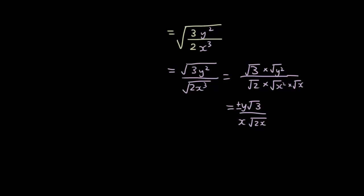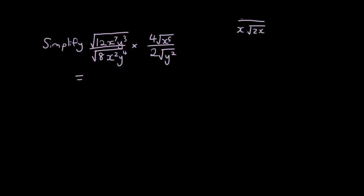Hopefully you understood everything so far. Now to finish off, I'm going to give you one that combines multiplication and division. This one looks pretty complicated — I'll let you guys decide how to do it, as there are a few ways. My way is to put the first part under one big square root: 12 over 8, x⁷ over x², y³ over y⁴.